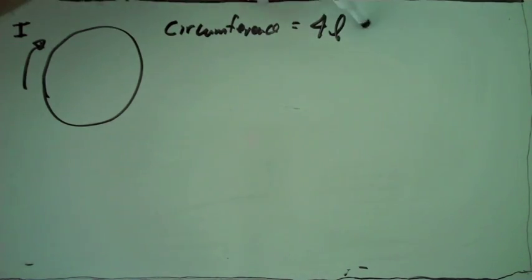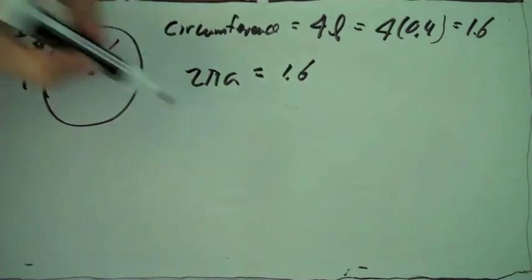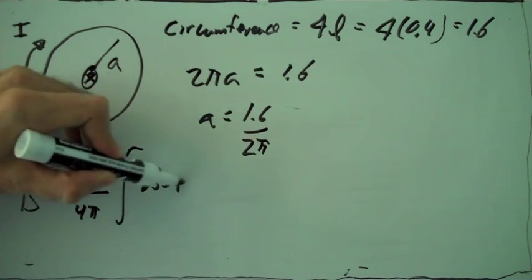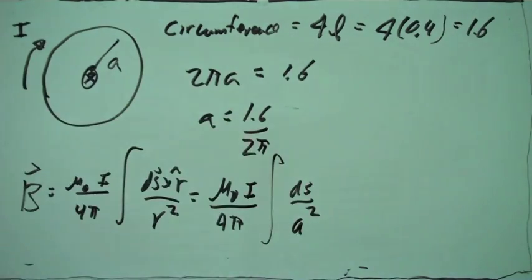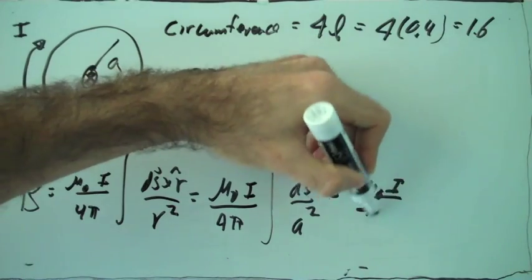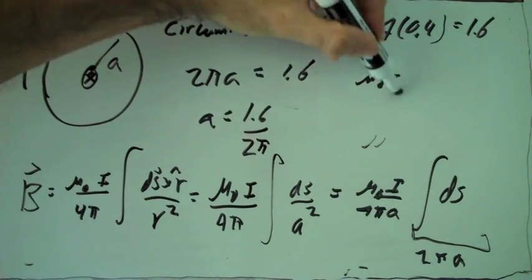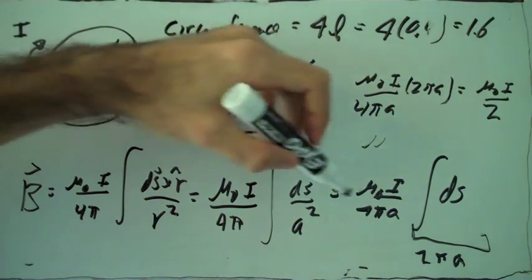The next part of the problem asks us to make the square loop into a circle. The perimeter of the square is 4L, and if the radius of the circle is A, then 2 pi A equals the circumference, so we can find A. The radius of the circle equals 2L over pi. The magnetic field at the center of the circle also points into the page and is given by the Biot-Savart law. Since ds is always perpendicular to R, ds cross R-hat is just dS times 1, and the radius A is constant, so it comes out of the integral. The integral of dS is just the circumference 2 pi A, so the magnetic field is mu-naught I over 2A.